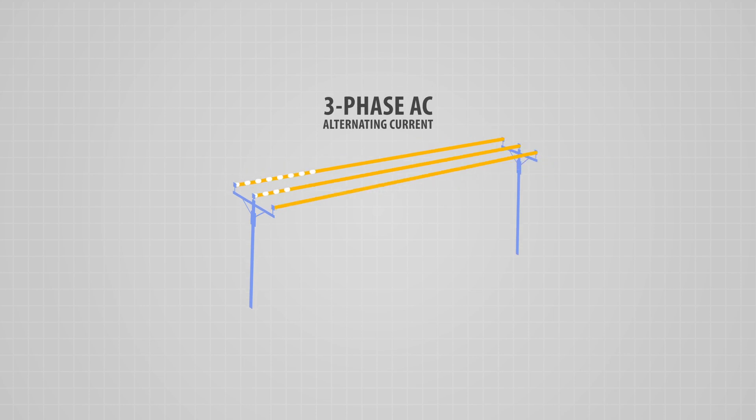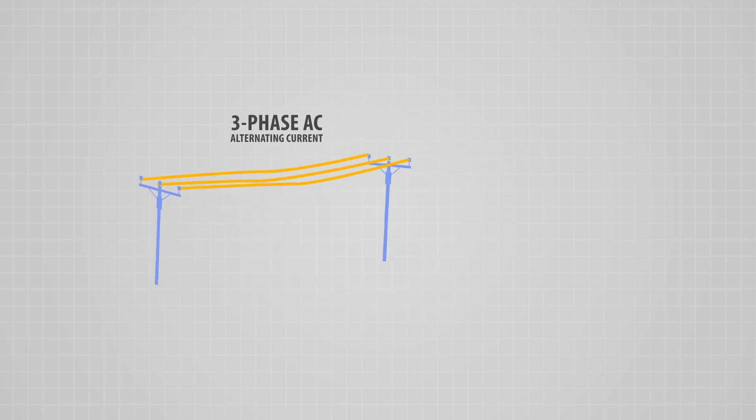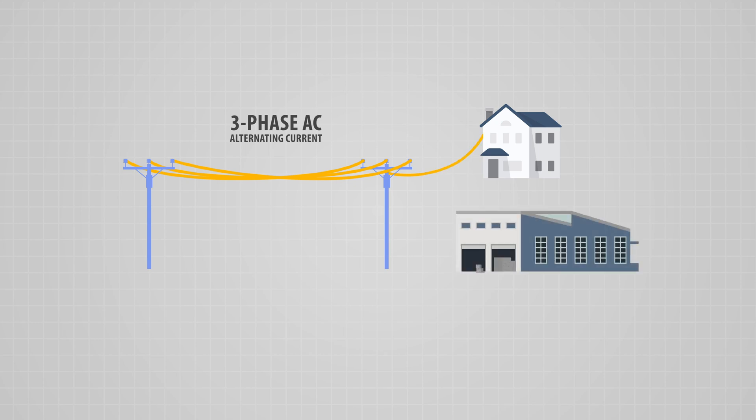Three-phase means that this back-and-forth flow of electrons occurs along three different lines, or conductors. While typical residential and commercial buildings can be powered without interruption by a single phase, larger industrial and commercial customers require the more consistent high voltage delivered by a three-phase system.